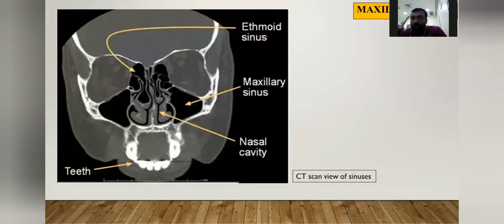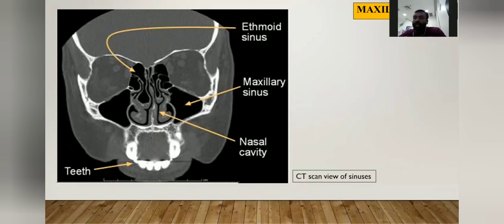This is a CT scan shown for identification purposes. You can see the maxillary sinuses clearly on either side of the nasal cavity, represented by dark shadows.